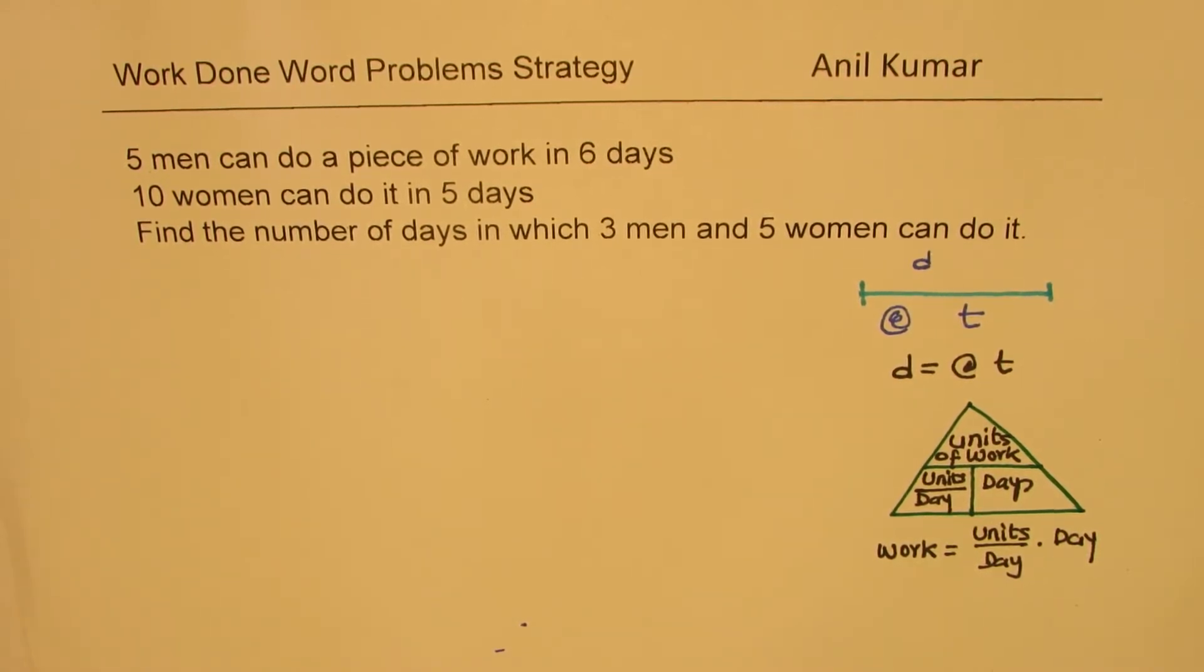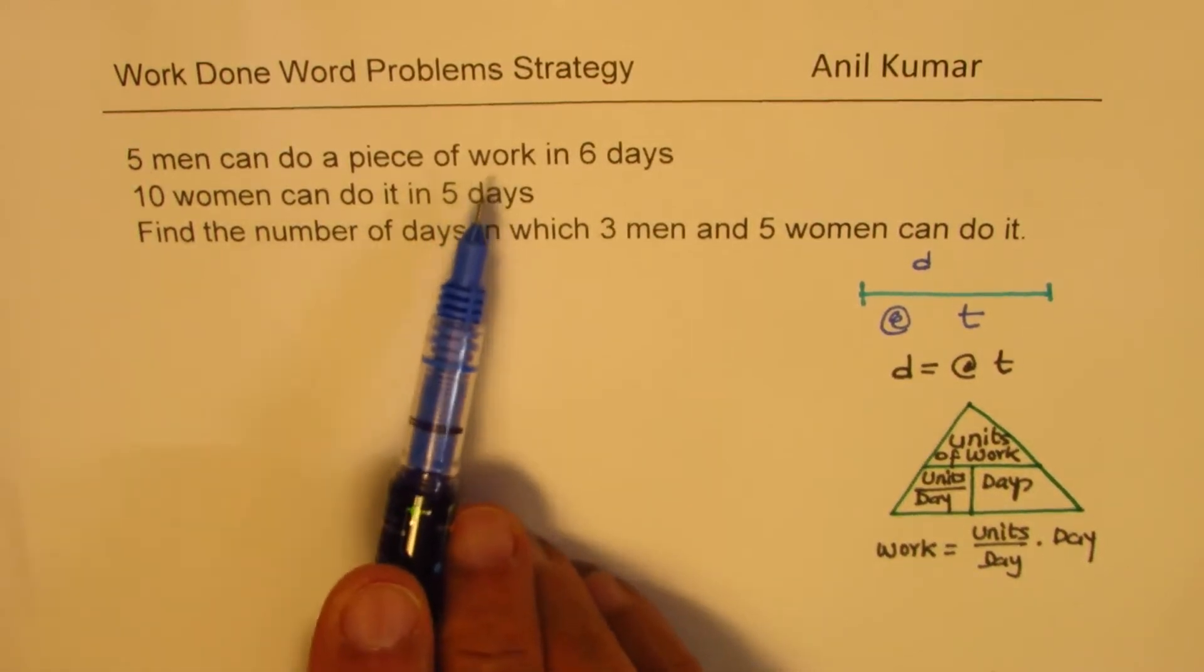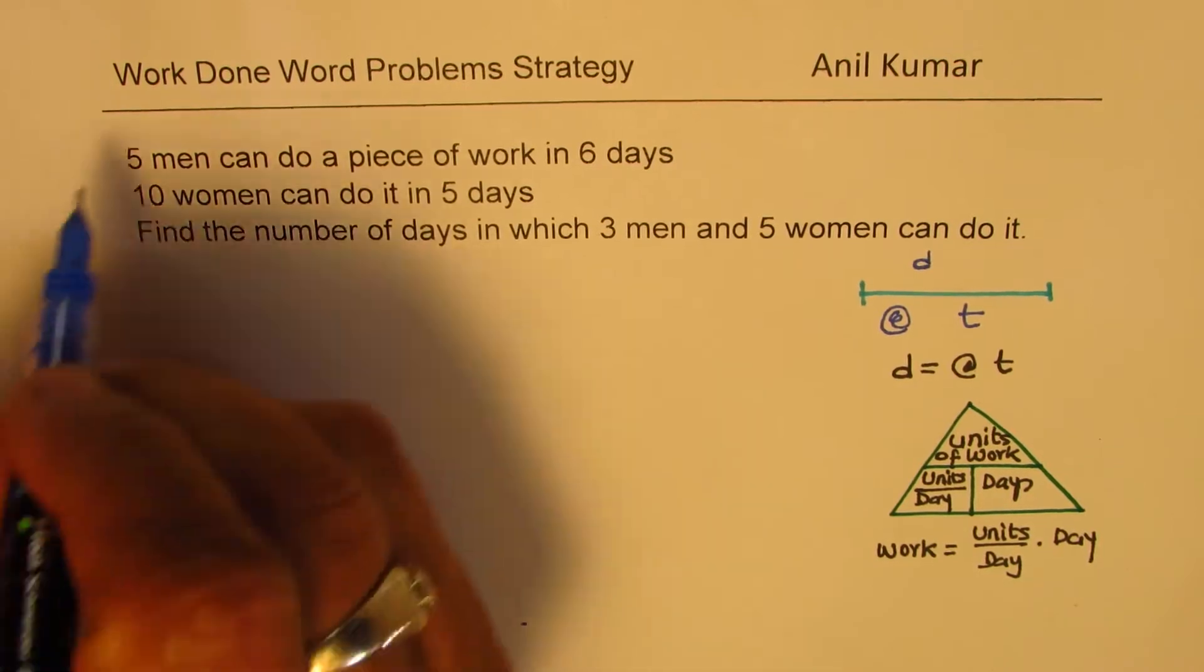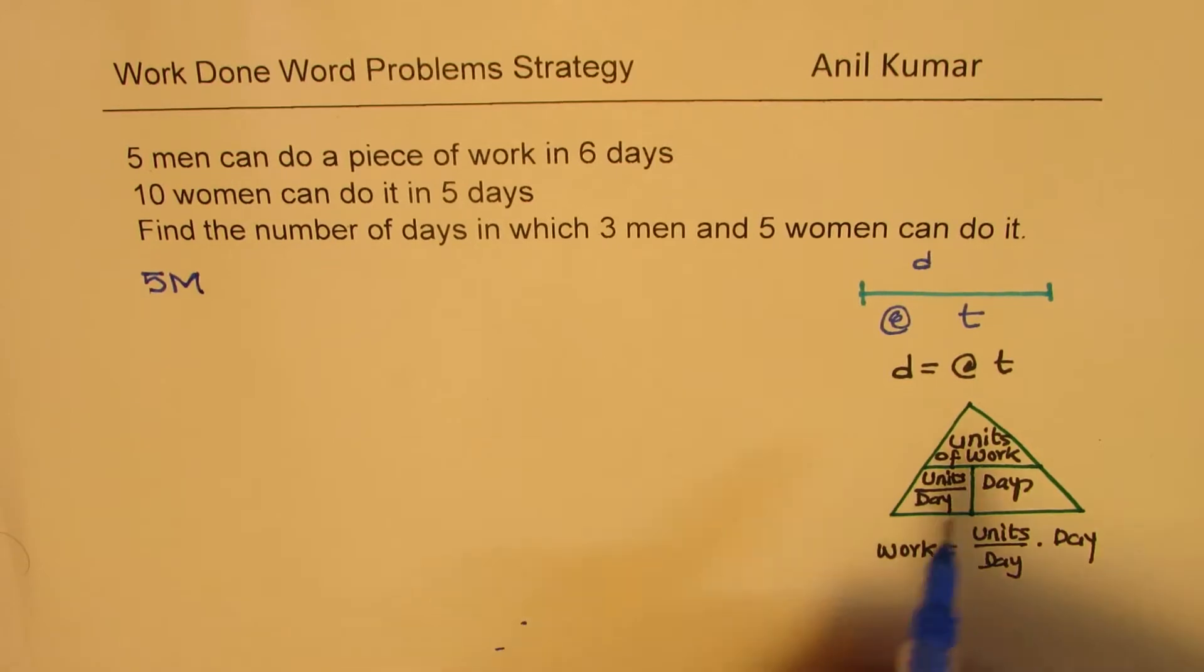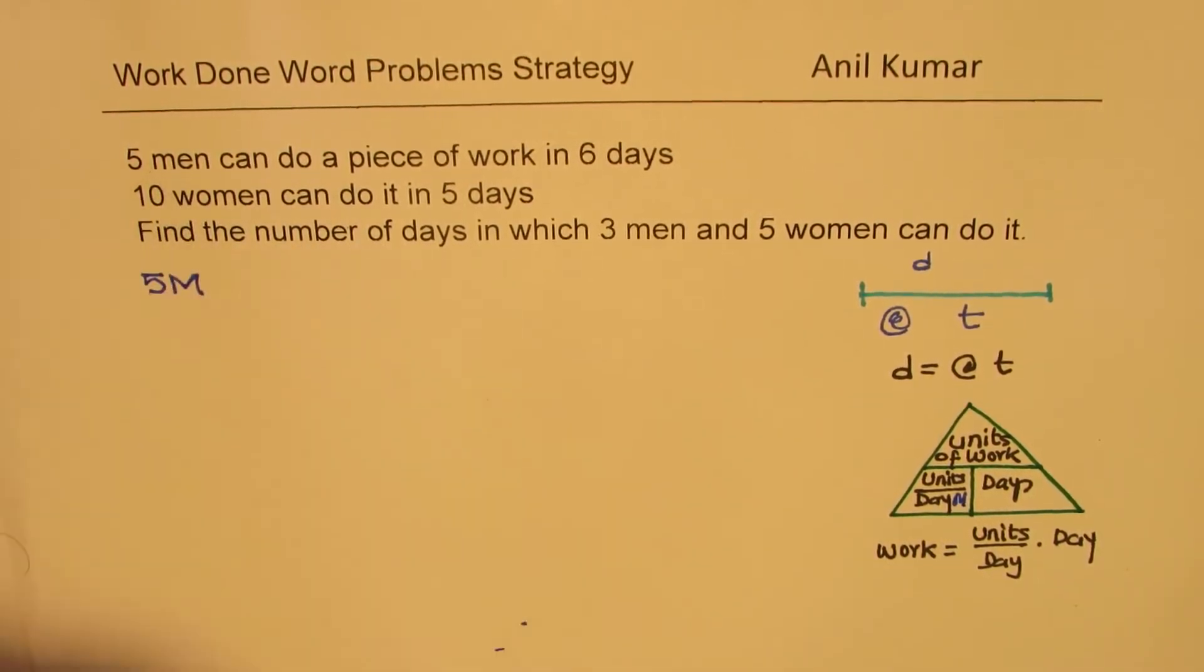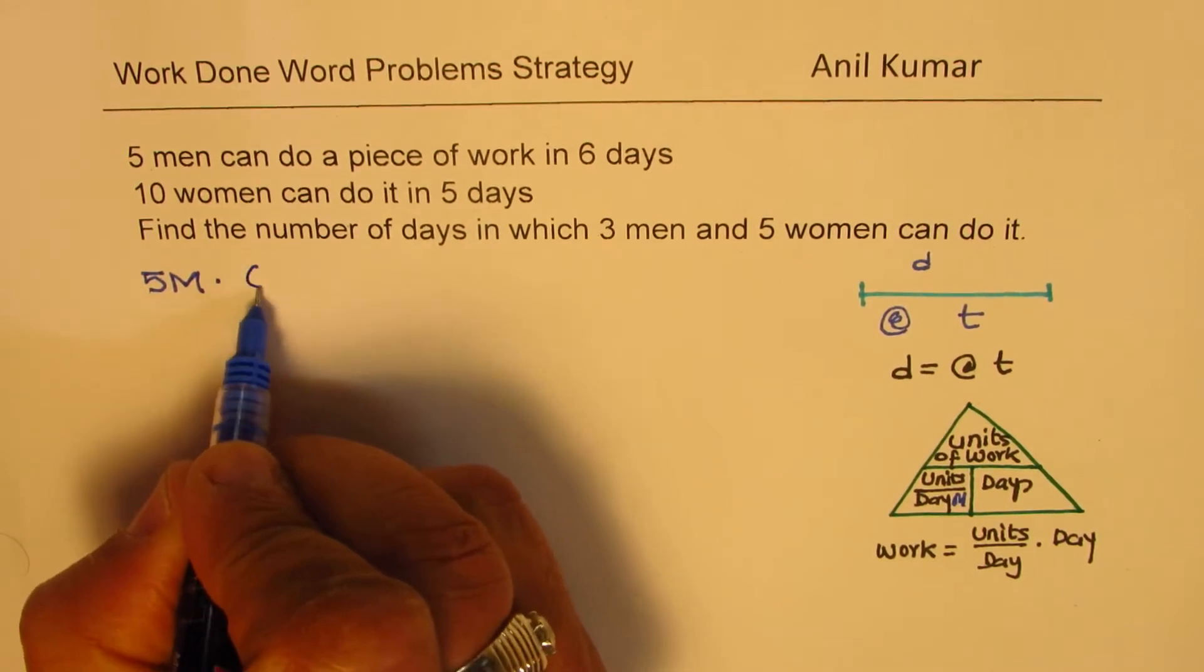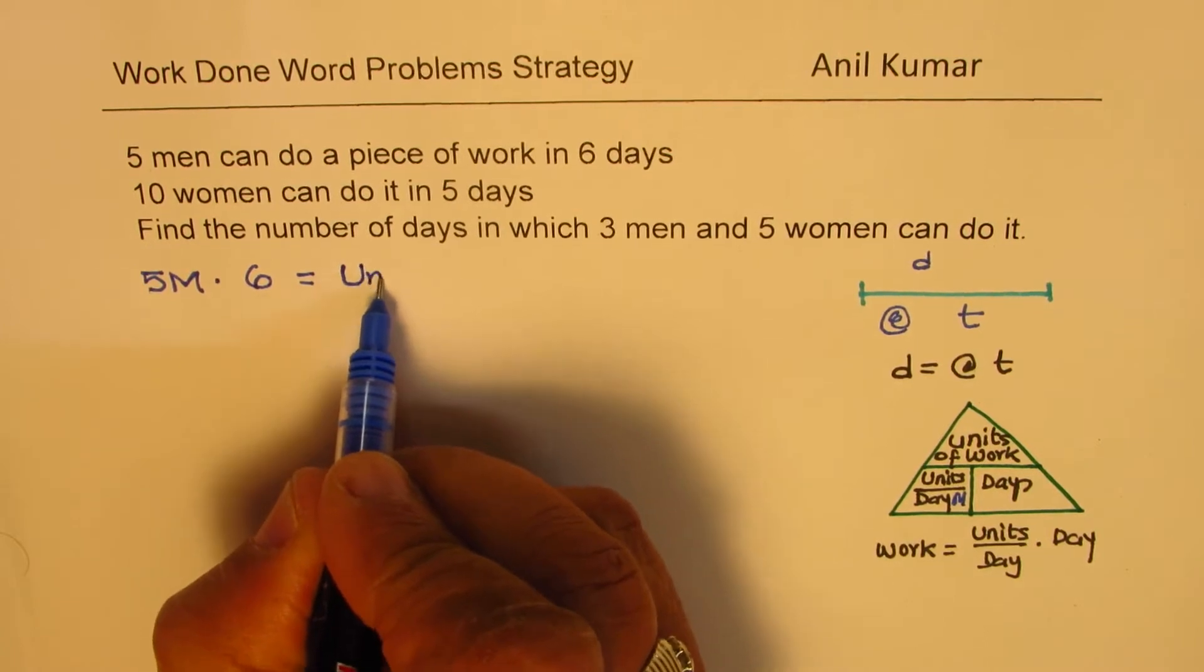Now, let's look into the question. It says five men can do a piece of work in six days. So, let this units per day for men be m. So, we say 5m. So, m is this, units per day, for men, six days, when we multiply that by days, when you say this times six days, that is the total unit of work. Let's call it total units.